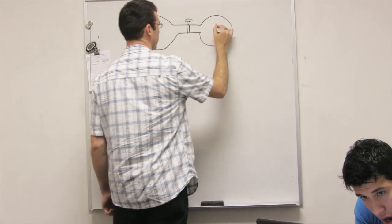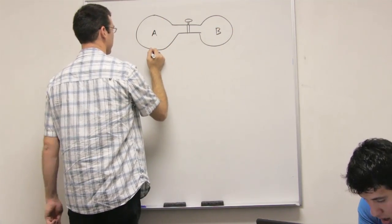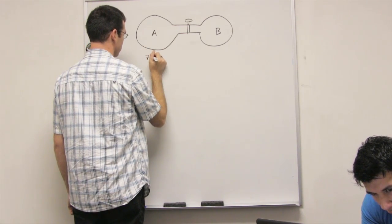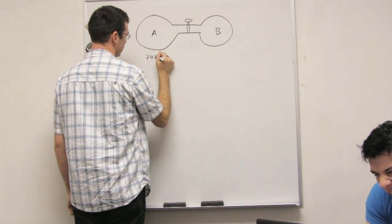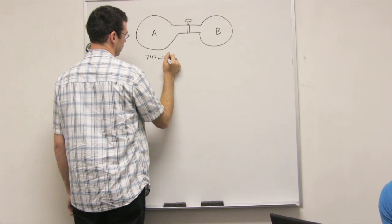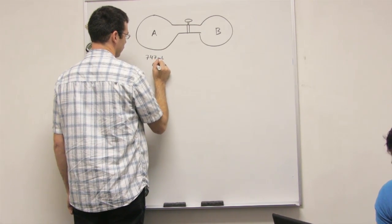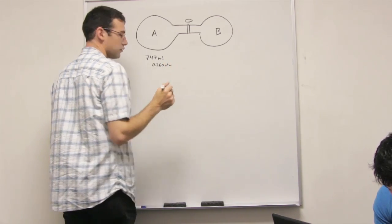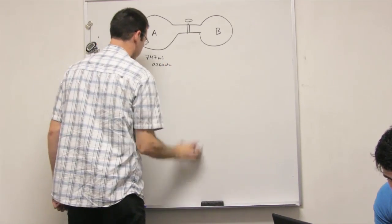Container A holds 747 milliliters of ideal gas at 2.60 atm. Just 2.60, sorry, 2.60.